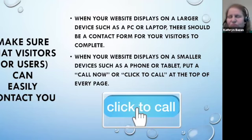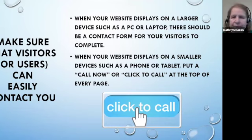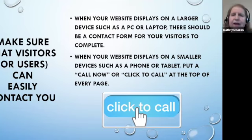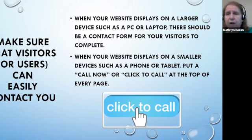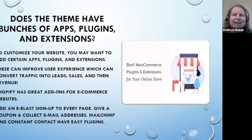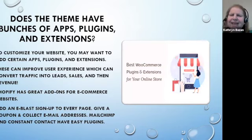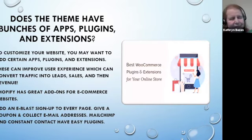Make sure that visitors to your website can easily contact you. You may want to have a click-to-call button or a chat-now button. You should have at least one of these on each page, because somebody may not come in through your homepage — depending on the keywords they used, they may actually land on page three or four. So make sure you've got that click-to-call or chat button on every page. Also check whether the theme has a lot of apps, plugins, and extensions — this allows you to customize the look, feel, and action of your website. If there aren't many, pick another theme.